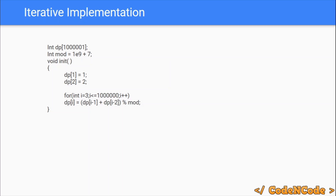There is a problem on CodeChef — the link will be in the description — which you are required to solve on your own. In this example you can take a jump of one or two; in that problem you can also take a jump of three. That is a really good exercise. Since you now have knowledge of this algorithm, you should be able to derive the solution for that problem as well, as it is not much different. Good luck, and thank you for watching. Until the next video, keep coding!